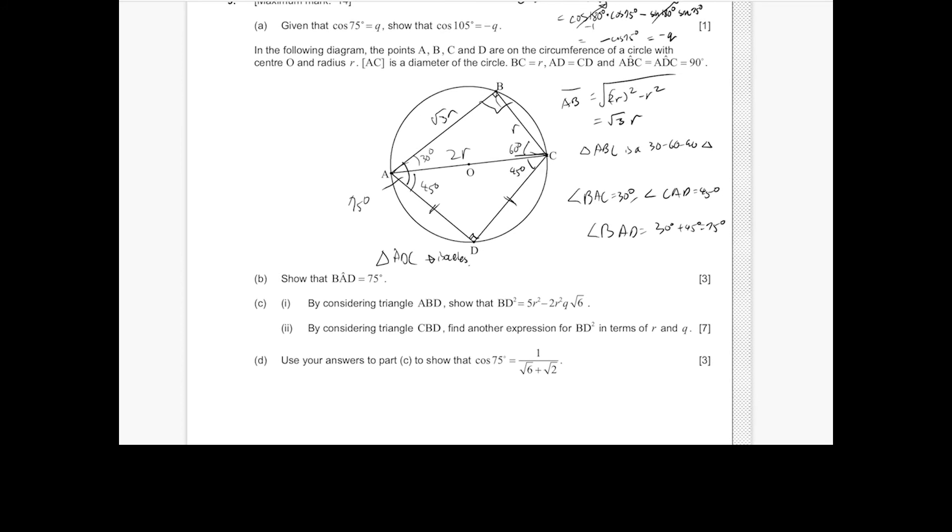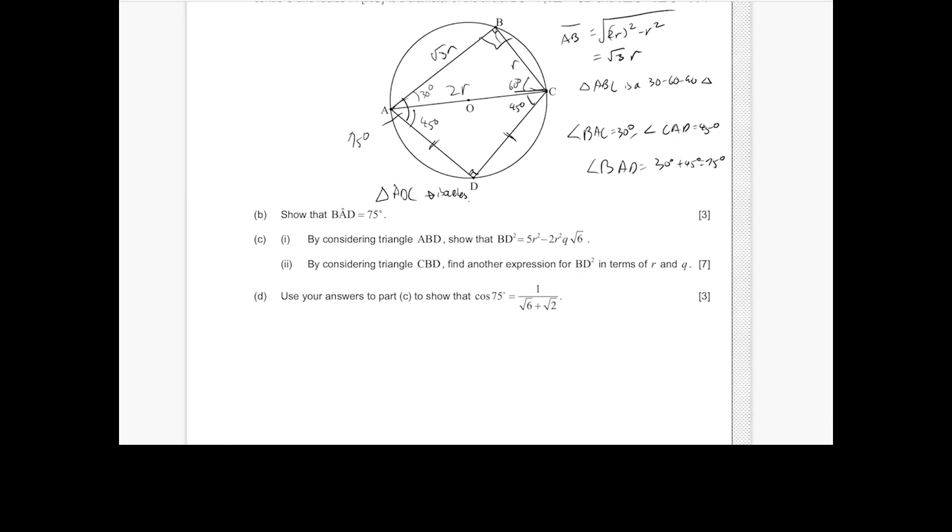Next, by considering triangle ABD, show that BD squared is... Okay, so in triangle ABD, if you use a cosine rule, we have BD squared equals AB squared plus AD squared minus 2 times AB times AD times cosine of the angle that's opposing side BD. So that's cosine BAD.